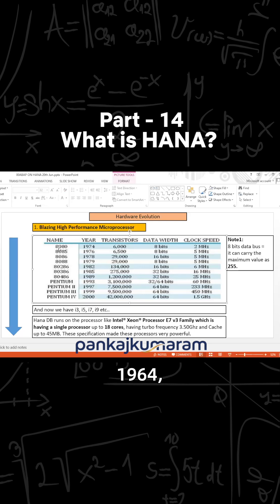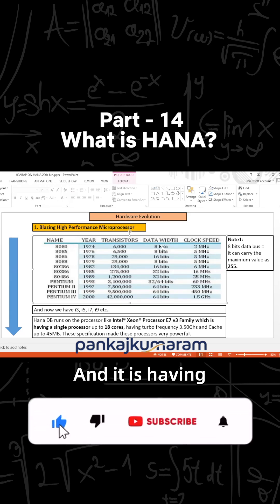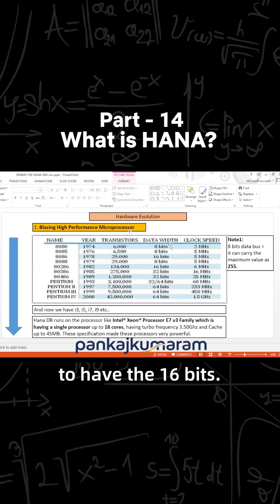Earlier in 1964, the 8084 processor, then in 1974 the 8080 processor, having a data bus of 8 bits and the address bus of 16 bits.